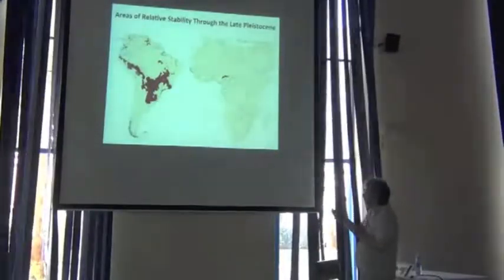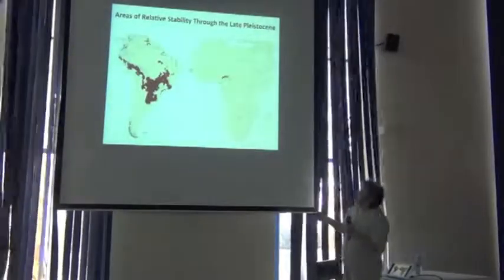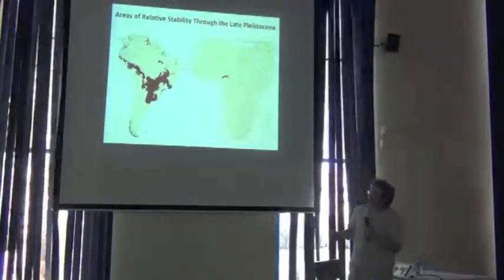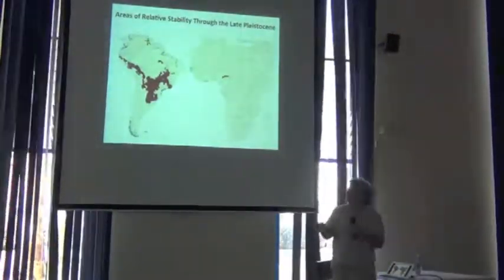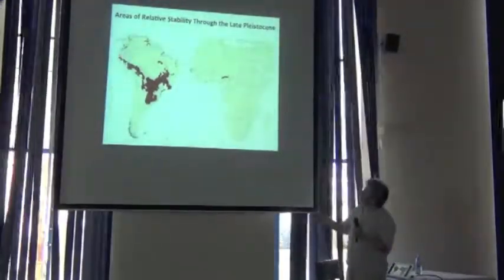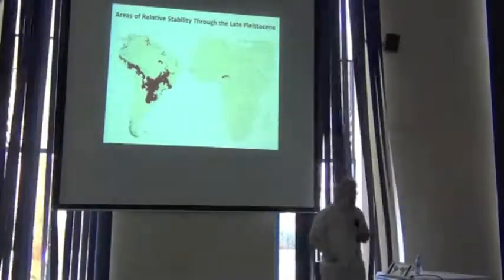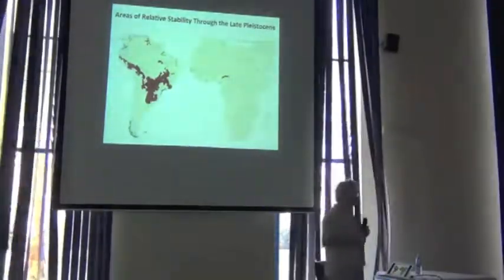Another visualization of the same piece of work. This is just areas that have reasonably stable species. You can see there's this whole park across Central and South America, whereas in Africa, we really don't see many areas of stability.